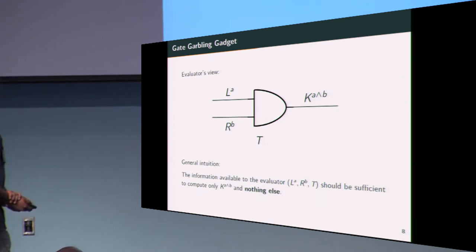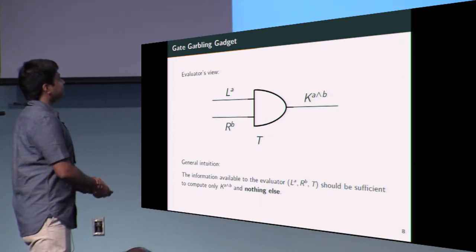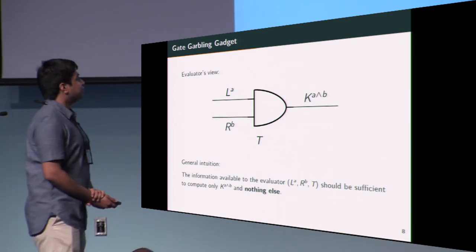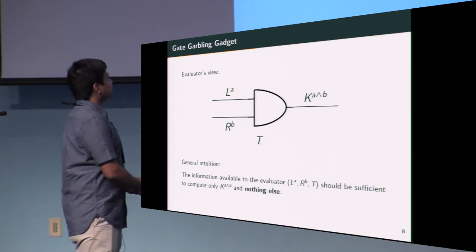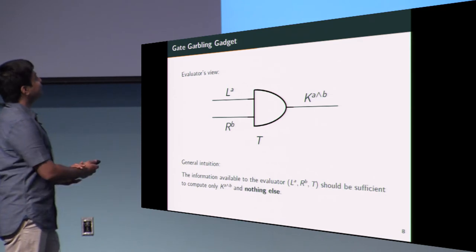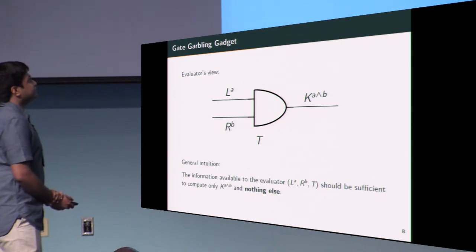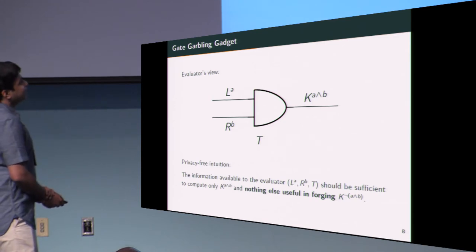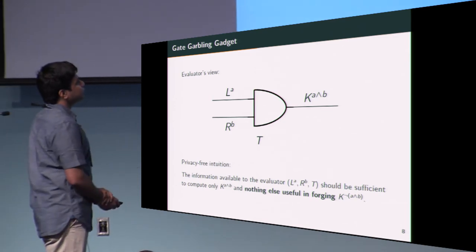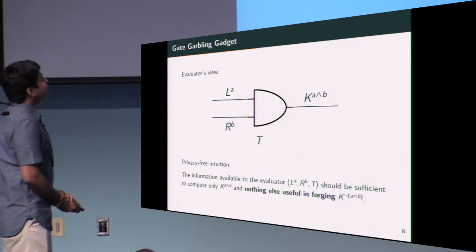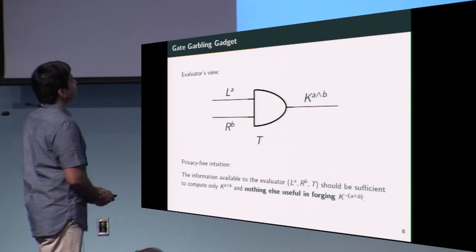Taking a closer look at the evaluator's view, the intuition in the general setting is that all the information available to an evaluator—that is, one key each on the left and right wires—should be sufficient to compute only the correct output key and nothing else. This also implicitly captures that the semantics of the keys that the evaluator has. In the privacy-free setting, we can specify that the nothing else is specifically nothing else useful in forging the opposite key. That is, we aren't concerned about protecting the semantics of the keys that the evaluator has. In fact, we use this to our advantage.